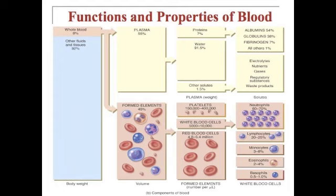The proteins in plasma break down into approximately 54% albumins, 38% globulins, 7% fibrinogens, and miscellaneous items making up the remaining 1%. The other solutes on the plasma end include electrolytes, nutrients, gases, regulatory substances, and waste products.